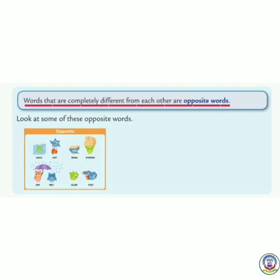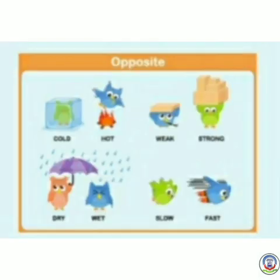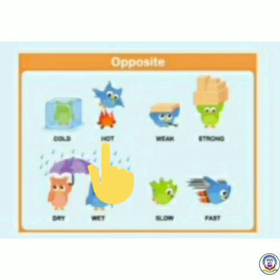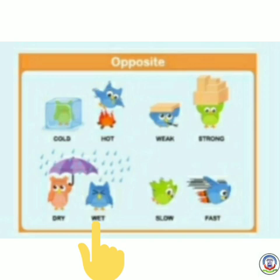Words that are completely different from each other are opposite words — वे शब्द जो एक दूसरे के विपरीत हों। Look at some of these opposite words: opposite of cold is hot, opposite of dry is wet, opposite of weak is strong, opposite of slow is fast.